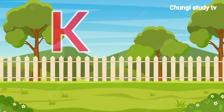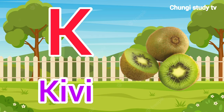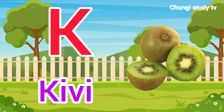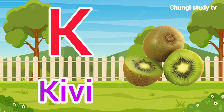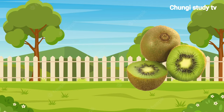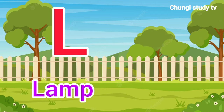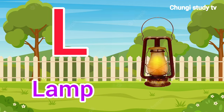K, K for Kiwi. Kiwi means Kiwi. L, L for Lamp. Lamp means Laltin.